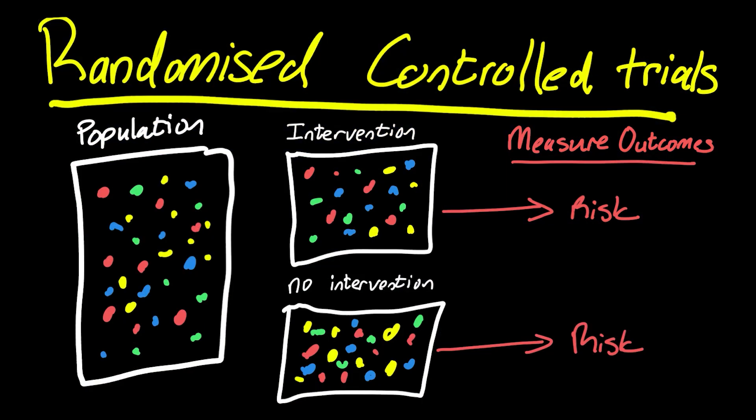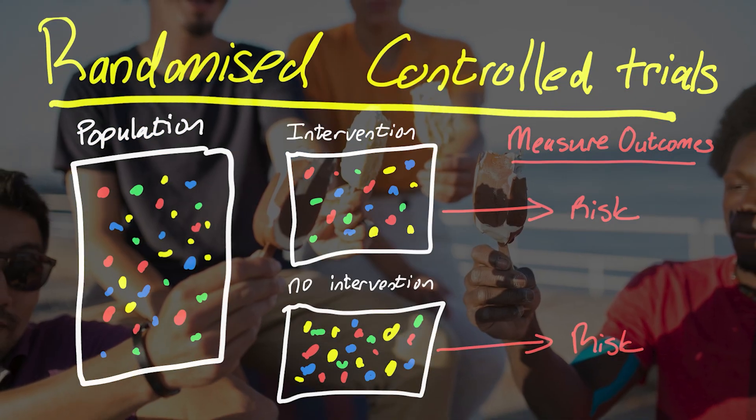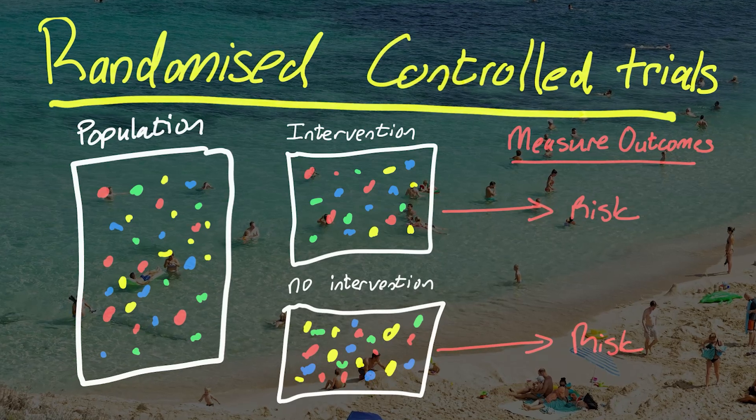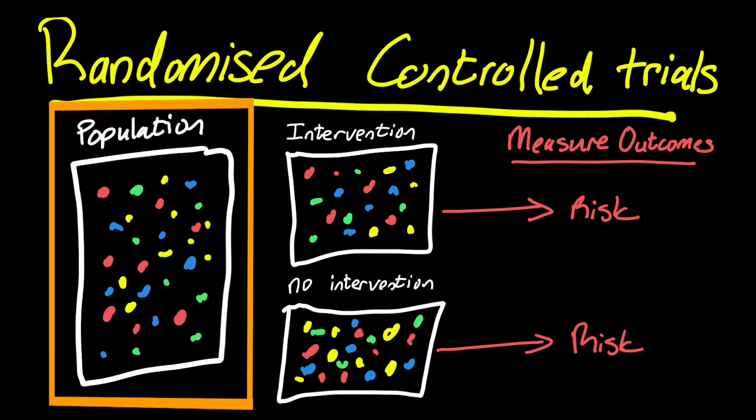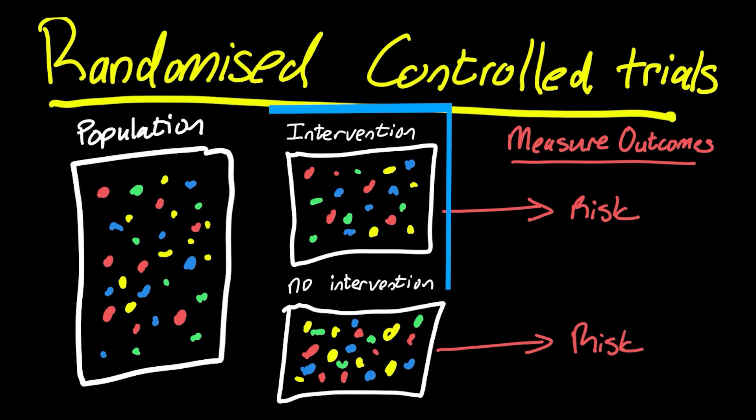The temperature goes up, people eat more ice cream; the temperature goes up, people are more likely to swim in the sea and get eaten by a shark. When we do a randomized control trial, because the population is randomly assigned into the intervention and the non-intervention group, every imaginable confounding variable is equally distributed in both groups and so cannot account for a difference in the outcomes that are measured.